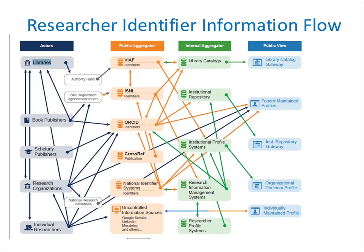ISNI tracks all sources and corrections are fed back to the source as they are made. The interoperability flows between ISNI and ISNI registration agencies and between ISNI and VIAF are indicated in the diagram by bidirectional arrows. Many actors are contributing to multiple public views of researcher ID information. Information provided by the same class of actors may flow through multiple possibly concurrent paths to internal aggregator systems and public views, suggesting the potential for duplication and inconsistency. Individual categories of public views seldom represent more than one type of internal aggregator.